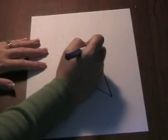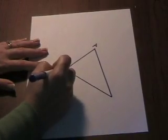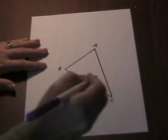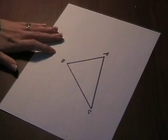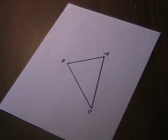Label each of the vertices. You will construct a perpendicular from each vertex to the opposite side of the triangle.